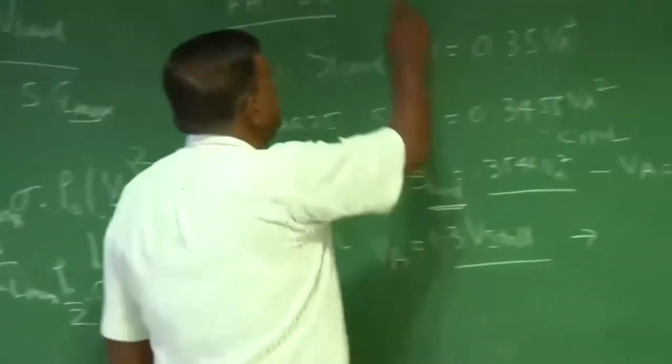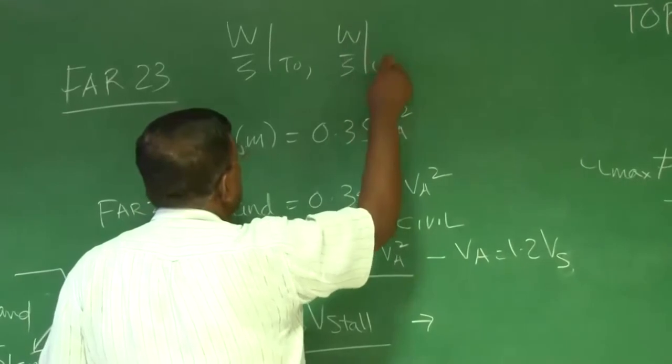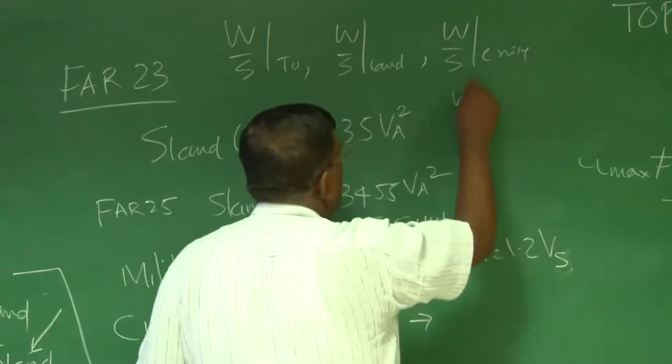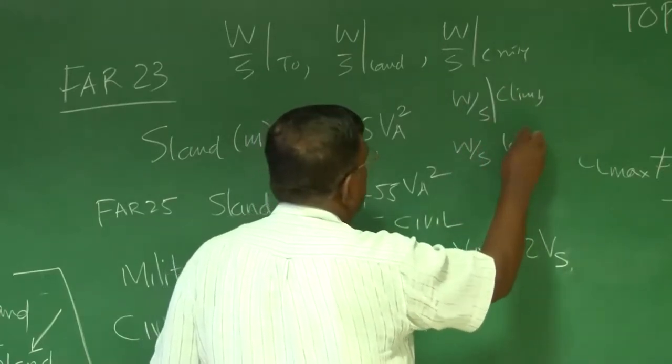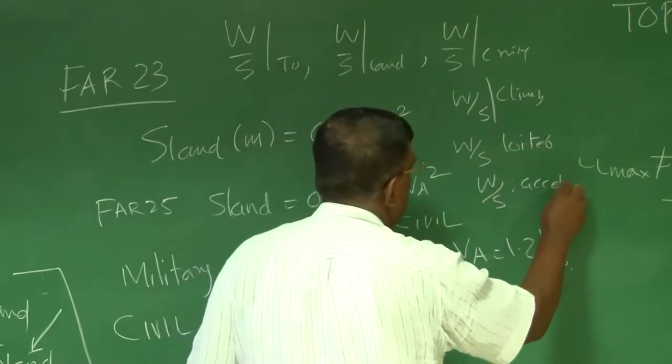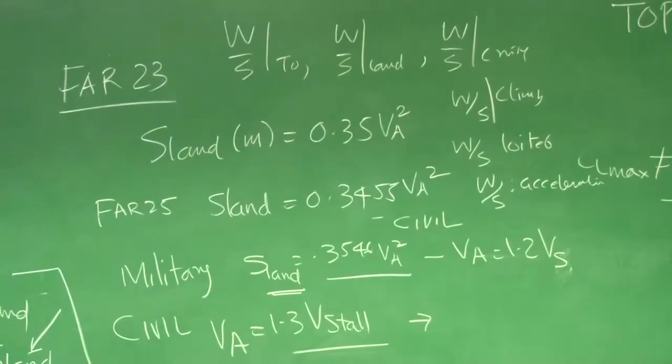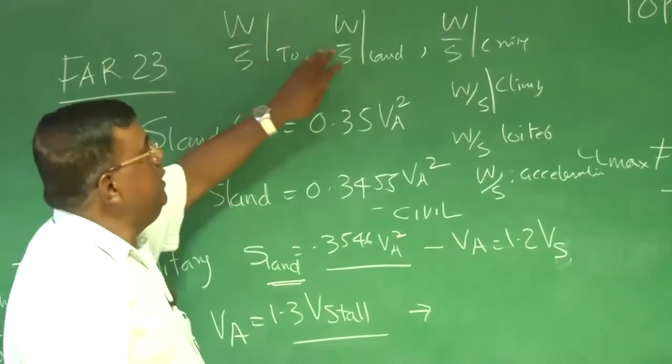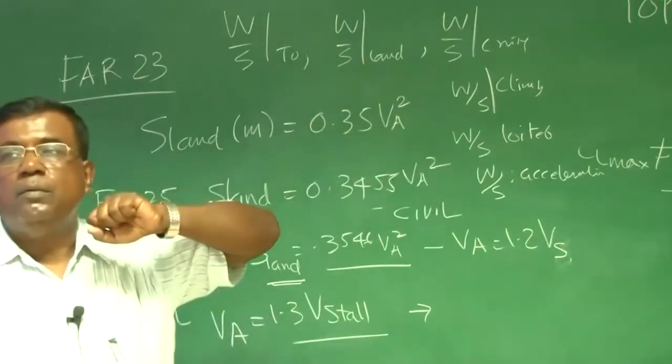You have W/S takeoff, you will have W/S landing, W/S cruise, W/S climb, W/S loiter, then W/S for acceleration. You will find to meet all these requirements, you will have different wing loadings. The challenge would be: which one should I pick? Because if I pick any one of them, it may satisfy that condition but may not satisfy other conditions. That is where design optimization becomes important.